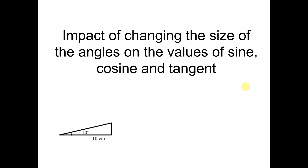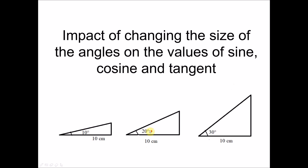You are given a right angle triangle where the angle is 10 degrees and the length of the base is 10 centimeters. We want to explore what will happen to the values of sine, cosine, and tangent when this angle increases to 20, 30, 40, 50, and so on, with the base length remaining the same.